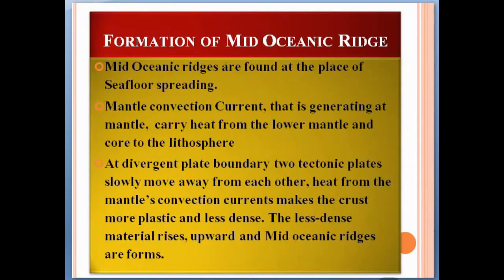Mid-oceanic ridges are found at the place of seafloor spreading. Mantle convection currents generated in the mantle carry heat from the lower mantle and core to the lithosphere. At divergent plate boundaries, two tectonic plates slowly move away from each other. Heat from the mantle's convection current makes the crust more plastic and less dense. The less dense material rises upward and mid-oceanic ridges are formed.